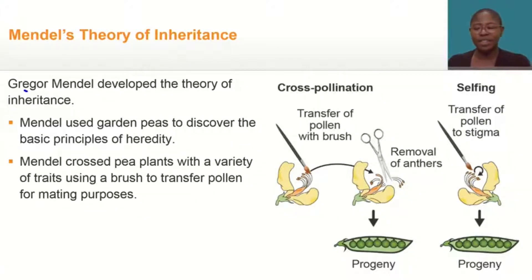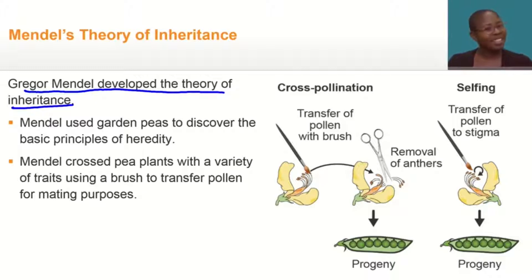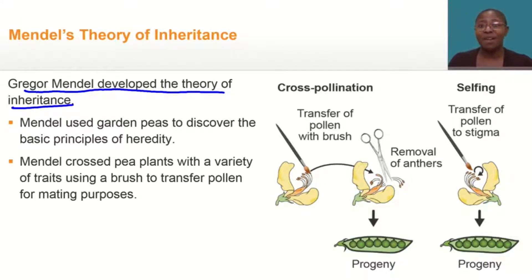Gregor Mendel developed the theory of inheritance. This was before we knew that molecules like DNA and RNA were the carriers of genetic information.